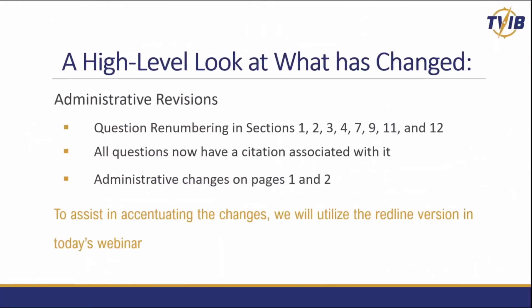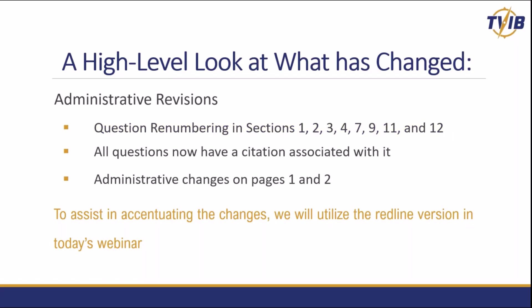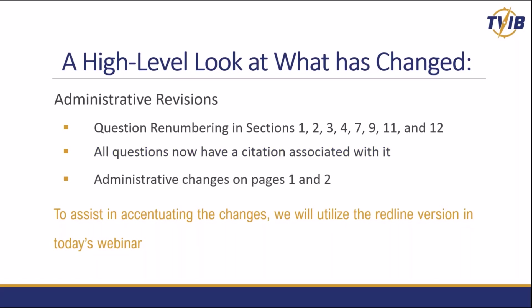Let's take a quick high-level look at what's changed in the current version. We've made plenty of administrative revisions. We've had to re-number all the questions in many sections. All questions now have a citation associated with them, which will help when we go into form.com to make sure there's a citation for each individual question. We've also made administrative changes to page one and two, and we're going to show you these changes today using the redline version so it's a little bit easier to pick out what those changes were.